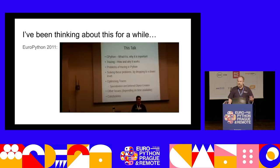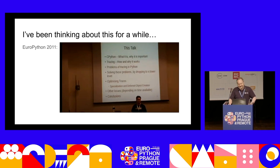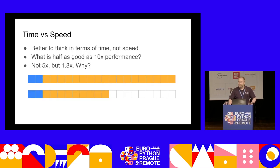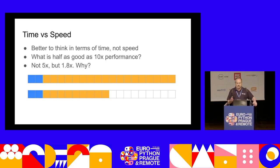I've been thinking about this for a while — here's a picture of me at EuroPython about 12 years ago. The first thing I want to talk about is speed, but I want you thinking in terms of time. In simple maths, if you want to make something five times as fast, you need to reduce the execution time by 80%.